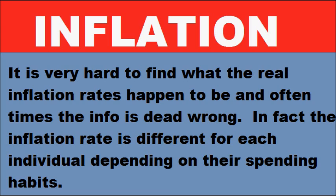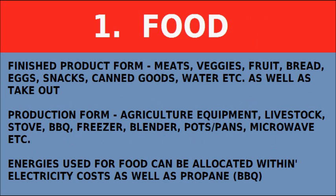We're going to be talking about needs basically — the needs that people need. The first one is food. How much does it cost you for the food? Energy will not be one of the items, as it is used across several categories. Any finished product of food is self-explanatory: meats, vegetables, fruit, bread, snacks — whatever food you have accessible. Also included are items for creating or storing food: agriculture equipment, livestock, a stove, barbecue, freezer, blender, pots and pans. Whatever it costs today to buy a microwave would be allocated towards the food cost.